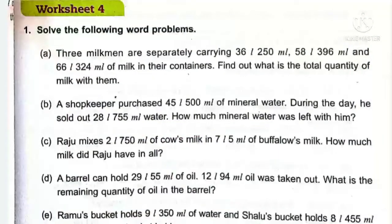Part C: Raju mixed 2 litres 750 millilitres of cow's milk with 7 litres 5 millilitres of buffalo's milk. How much milk did Raju have in all? This question is also easy — cow's milk is 2 litres 750 millilitres and buffalo's milk is 7 litres 5 millilitres. Raju mixed both.